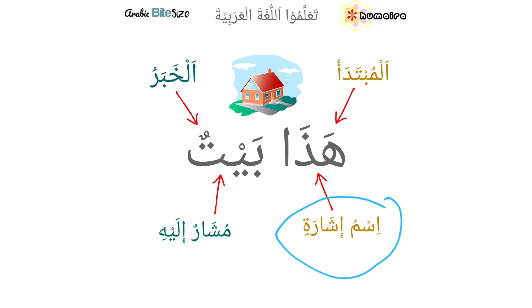We mentioned in the previous videos that a word can fit into three parts of speech or three categories: a word could be a noun, a verb, or a particle. As for هذا, هذا is a noun — اسم.